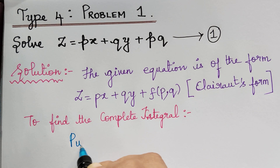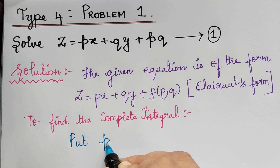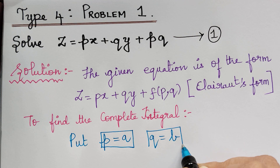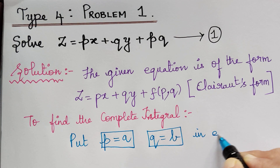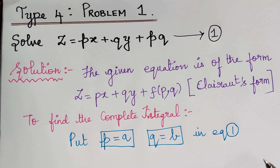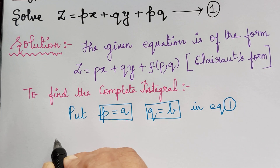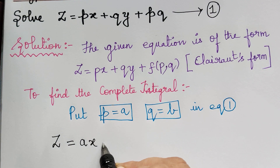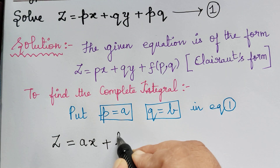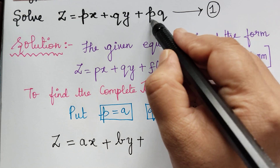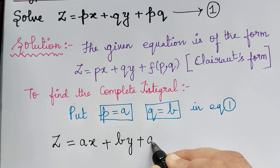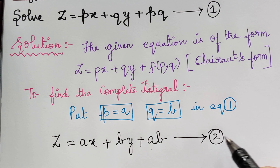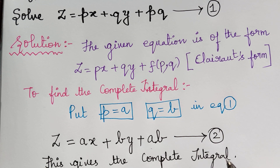To find the complete integral, put p equal to a and q equal to b in equation 1. So we get z = ax + by + ab. This gives us the complete integral. Let us mark this as equation 2.